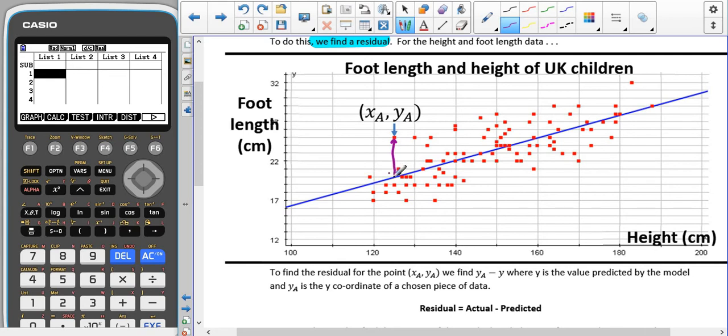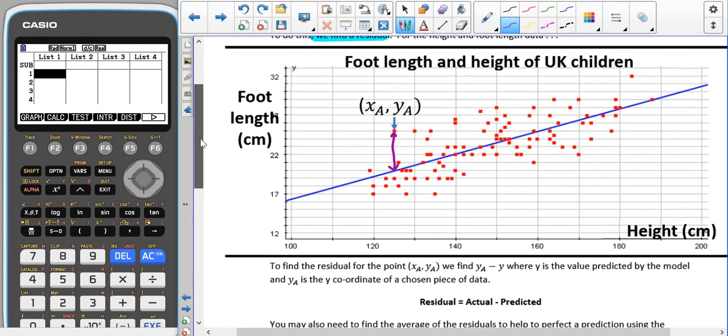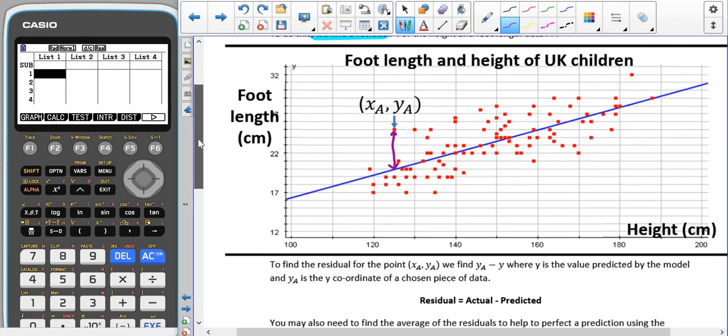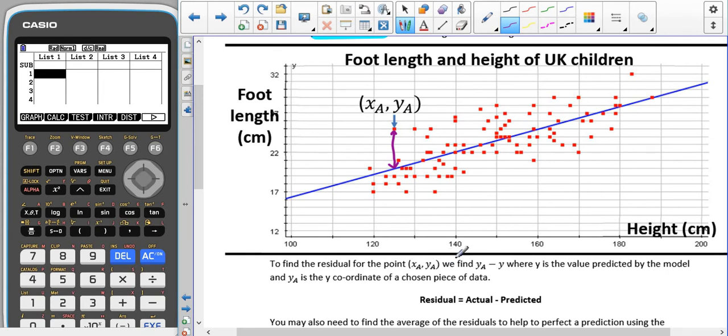We're looking at the difference between that particular point and the value that would be given if we were to use our regression line as an estimate. To find the residual of the data (x, y), we find y_actual minus y_predicted. This is the y value that we get from our regression line.